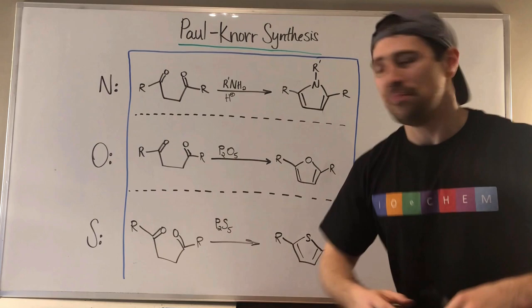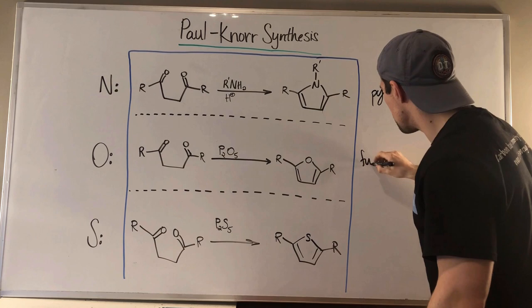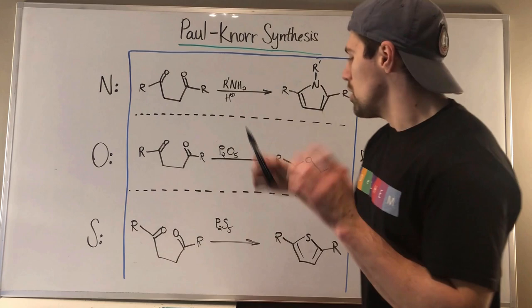So the Paul-Knorr synthesis. What's really cool is, clearly, the products we get here, we can make a pyrrole derivative, we can make a furan derivative, and we can make a thiophene derivative.